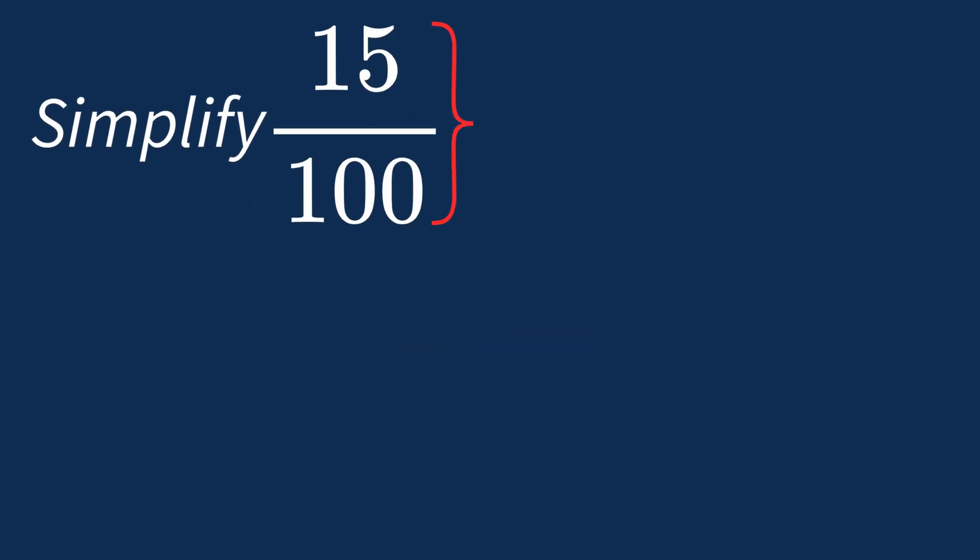To simplify 15 over 100, we need to look for the common factors between the top number, the numerator, and the bottom number, the denominator.